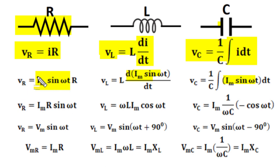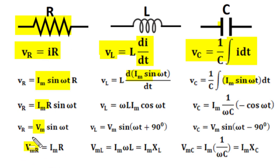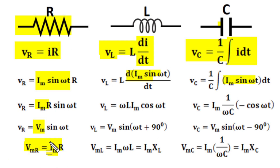In resistance, the product of I_m and R can be called the amplitude of voltage. The peak magnitude of voltage across resistance has the relation V_m = I_m × R, and if we divide both sides by √2 it becomes V_rms = I_rms × R. Both current and voltage are in the same phase in pure resistance.